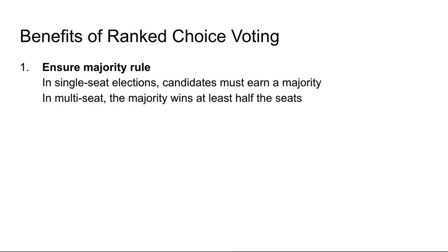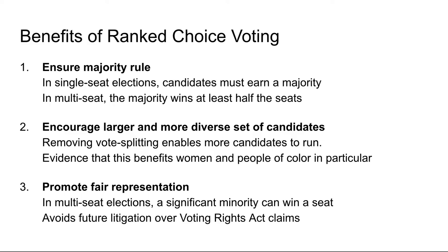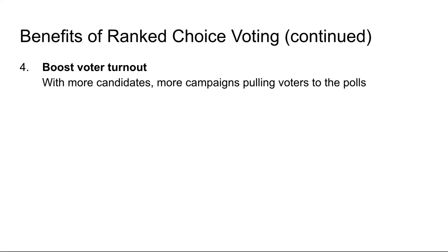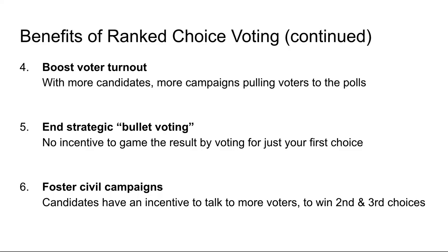The committee identified six key benefits of moving to ranked choice voting. One, it ensures majority rule. Two, by eliminating vote splitting, we expect it will encourage a larger and more diverse set of candidates to run — and there's evidence that this particularly benefits women and people of color candidates. Three, it promotes fair representation; although it is very much a majoritarian system, it still allows a significant minority to occasionally win a seat. Four, we expect it to boost voter turnout — more candidates means more campaigns, pulling voters to the polls. Five, it ends bullet voting games, where voters strategize over whether to vote for fewer candidates than there are seats — there's no incentive to do that under ranked choice. And finally, it helps foster civil campaigns, because candidates have an incentive to talk to supporters of their opponents to pick up second and third choices.